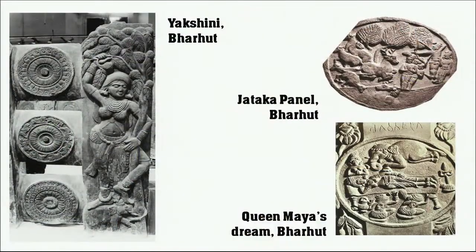In the previous section on the Mauryan period we talked about the Yakshini and saw how the Didarganj Yakshini was an independent sculpture. Now we look at the relief carved at Bharhut, which shows a similar Yakshini but in a different composition. Later at Sanchi we will see how it again became so different.